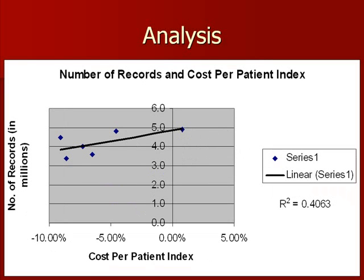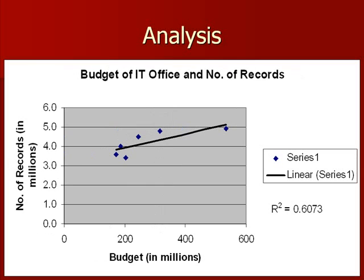Next, we compare record numbers and cost index. The correlation here is moderate — at .4062, the number is about halfway between 0 and 1. The next comparison is record numbers and budget. As illustrated by the graph, there is a correlation between the two. The calculation is .6073, which is closer to 1 than 0.